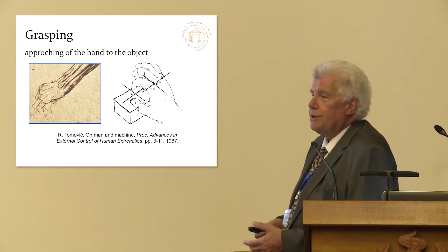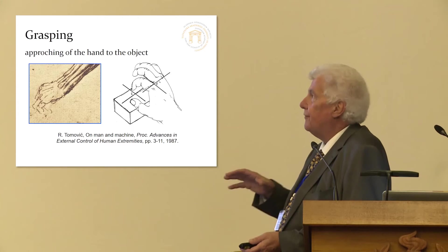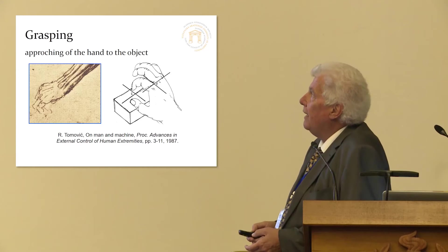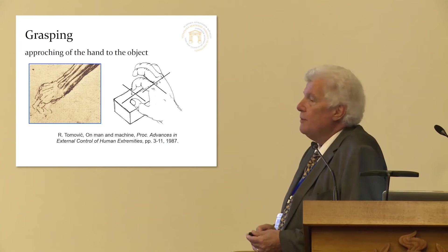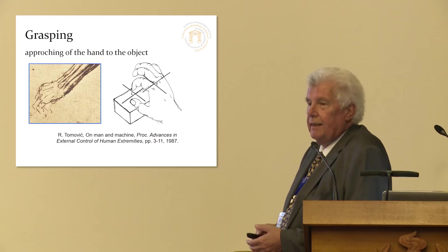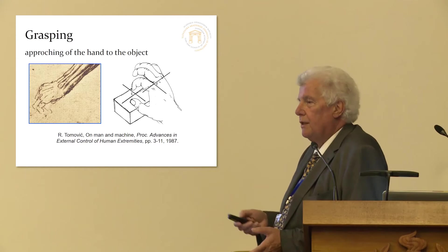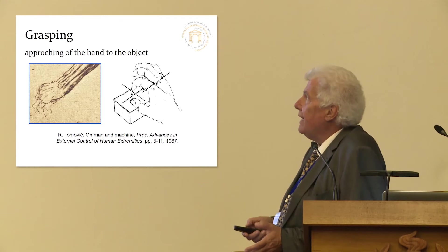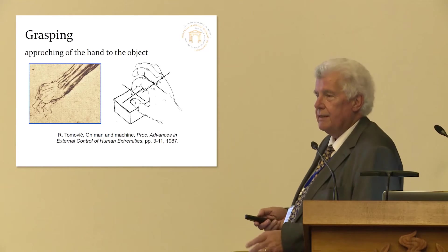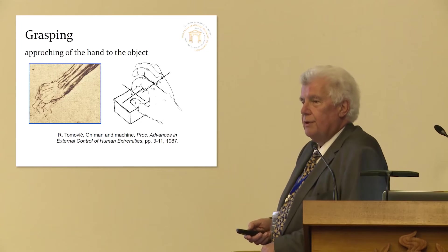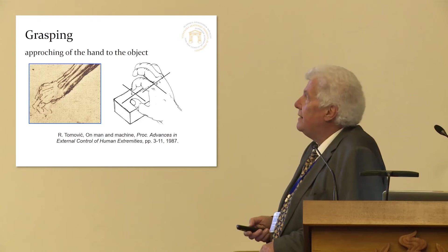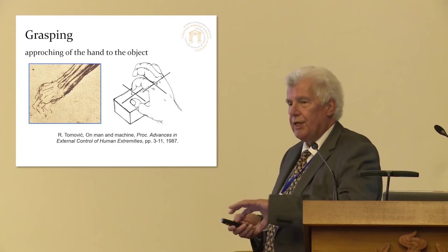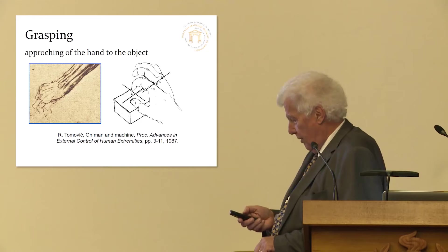But Professor Tomovic was also interested in the phase of reaching, the phase when the hand is approaching to the object. And he determined two things, actually. That this phase of approaching is very similar to all of us, that we are doing this in pretty much the same way. And secondly, that this pre-shaping of the fingers in the phase when the hand comes close to the object, is based on geometrical primitive and not really on the exact shape of the object.